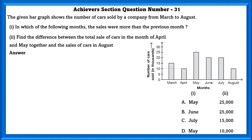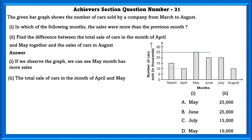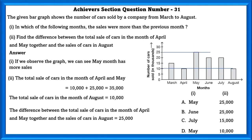Achievers section question number 31. The given bar graph shows the number of cars sold by a company from March to August. One, in which of the following months the sales were more than the previous month? Two, find the difference between the total sales of cars in month of April and May together and the sales of cars in August. First one, we can observe from the graph that May month has more sales. Second one, the total sales of cars in the month of April and May is equal to 35,000. Total sales of cars in August is equal to 10,000. So the difference between the total cars sold in the month of April and May together and the total cars sold in August is equal to 25,000. That is the A option.